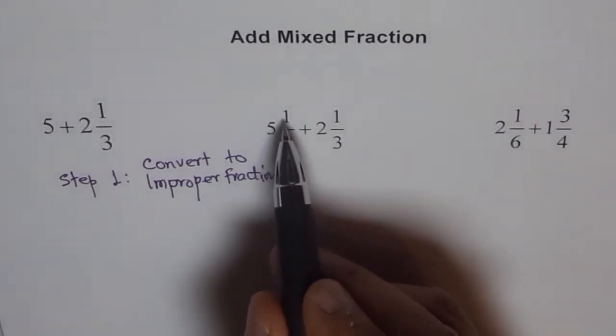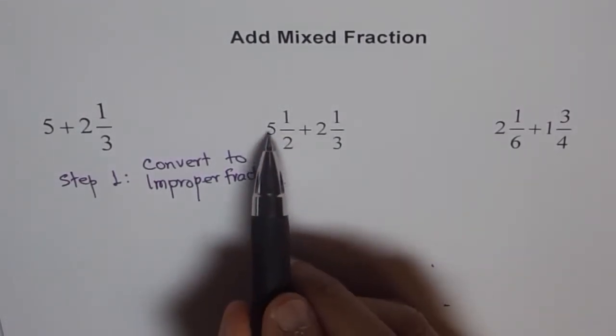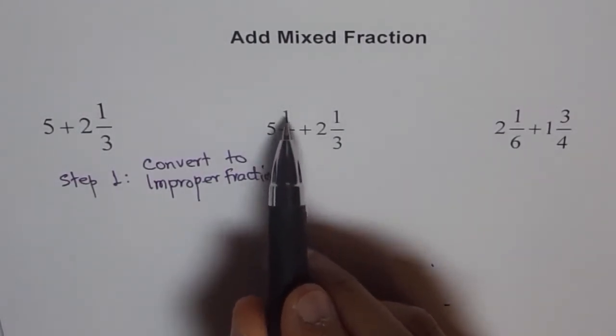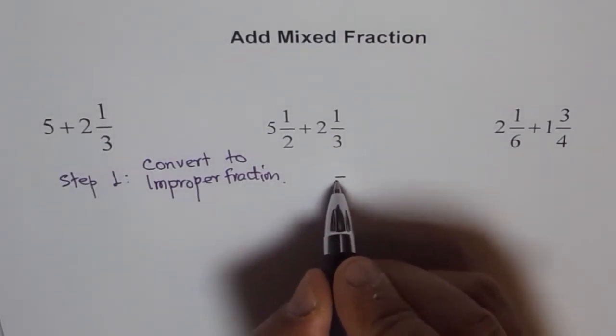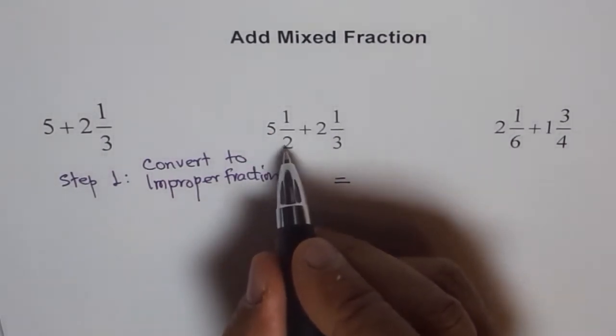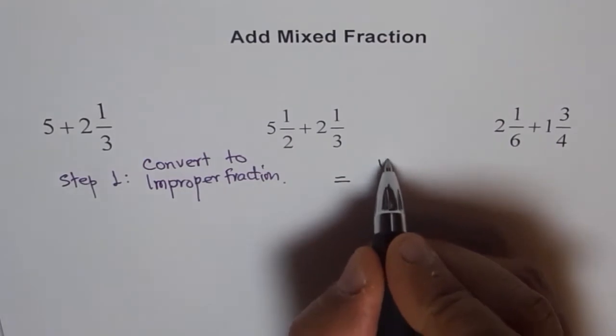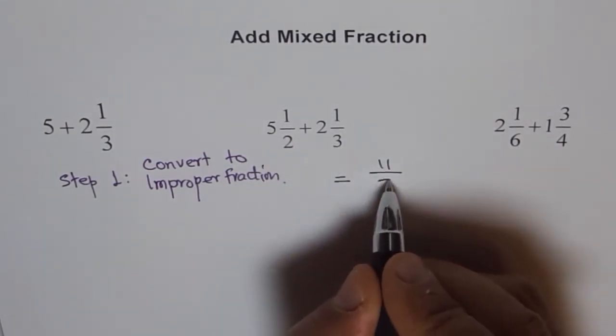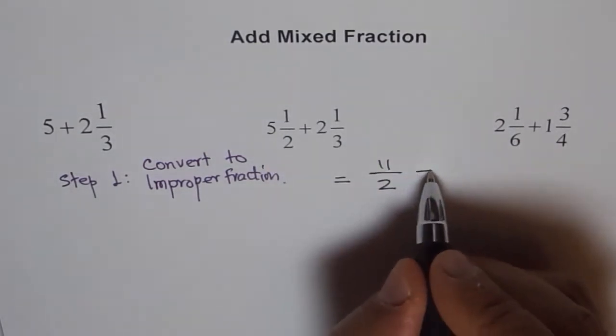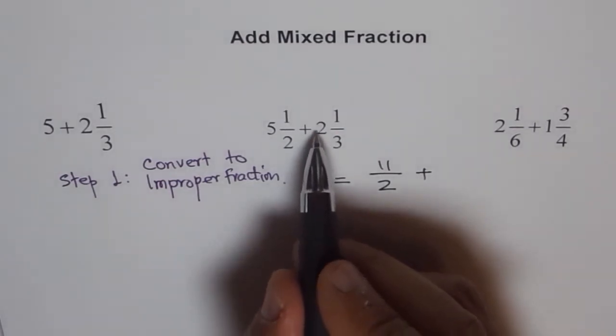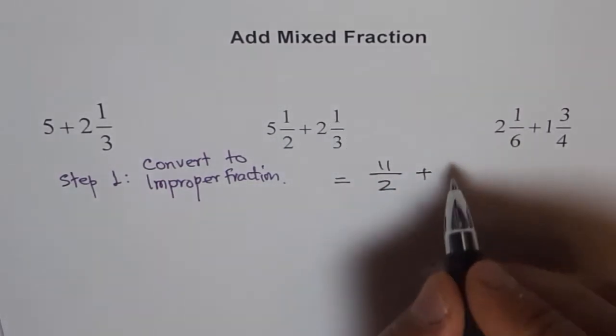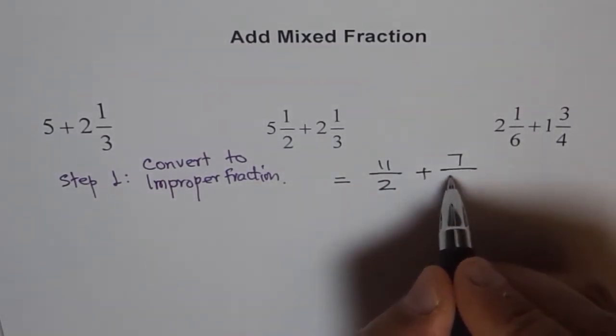Now, we have 5 and 1 over 2. You need to multiply 5 by 2 and then add 1. So, this is equal to 5 times 2 is 10, 10 plus 1 is 11. So, we get 11 over 2. Plus, we will do the same here. 2 times 3 is 6, 6 plus 1 is 7. We get 7 over 3.